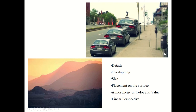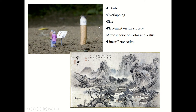Going back and reviewing — identify which element dominates in this image with automobiles. Which would you think creates the illusion of space: details, overlapping, size, placement, atmospheric perspective, or linear perspective? It is actually the same car placed three times. For this mountain range, which one dominates — details, overlapping, size, placement, atmospheric, or linear perspective? Same question here — which one dominates the illusion of space: details, overlapping, size, placement, atmospheric, or linear?